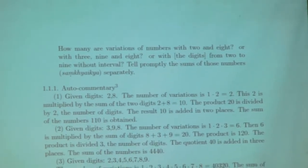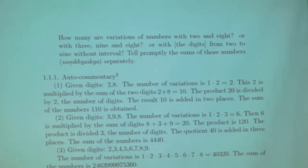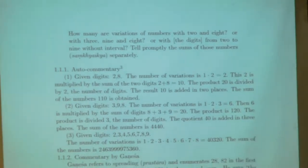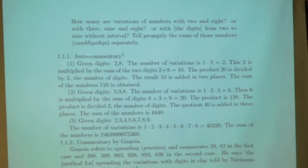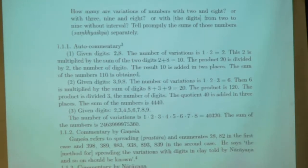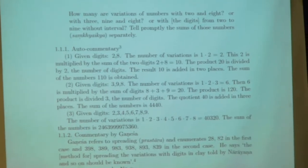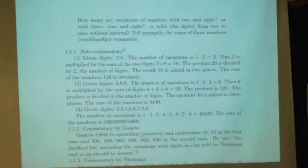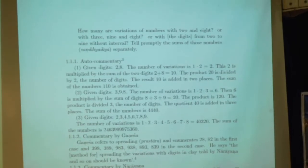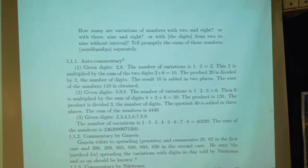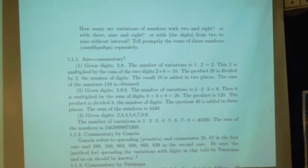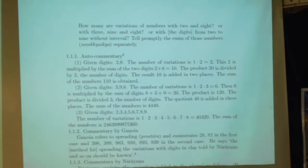How many are the variations of numbers with digits 2 and 8, or with digits 3, 9, and 8, or with a digit from 2 to 9 without interval? Tell promptly the sum of those numbers. So: Sankhya, Aikya — the number of variations and their sum.